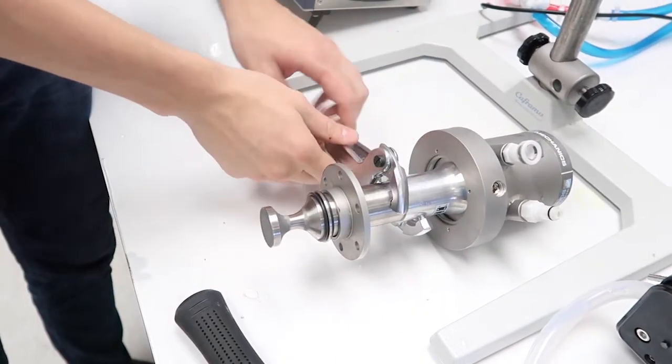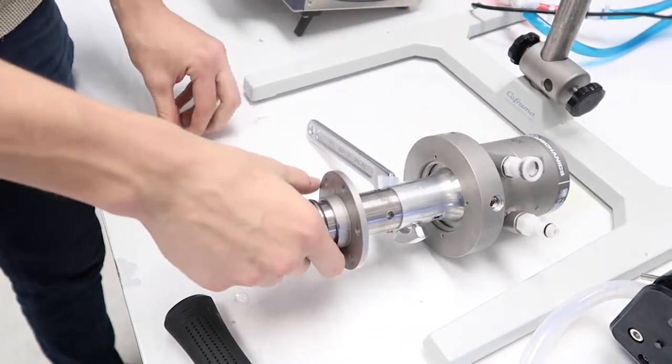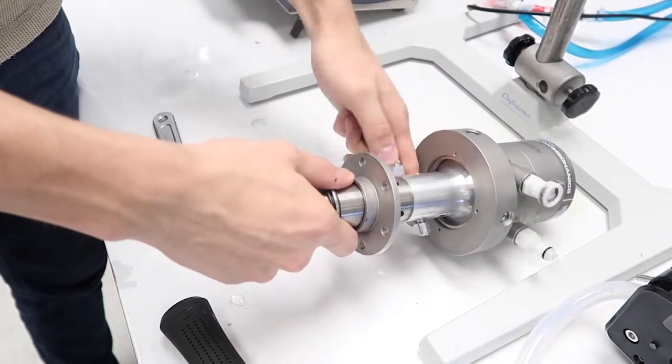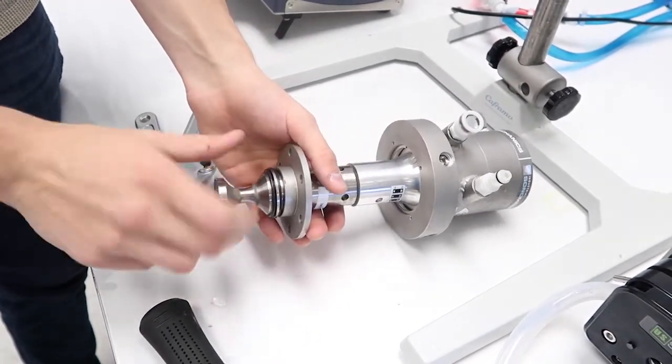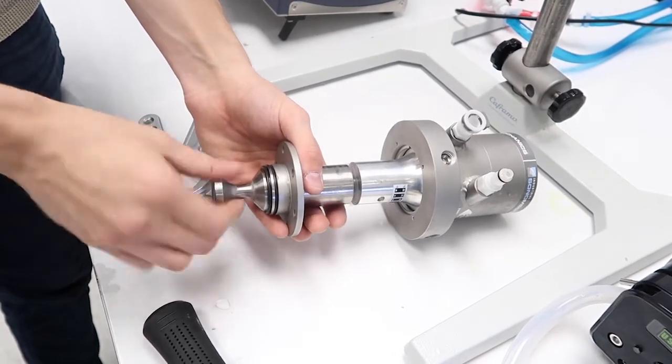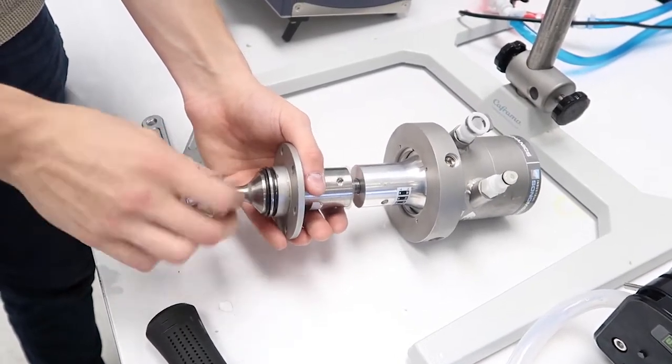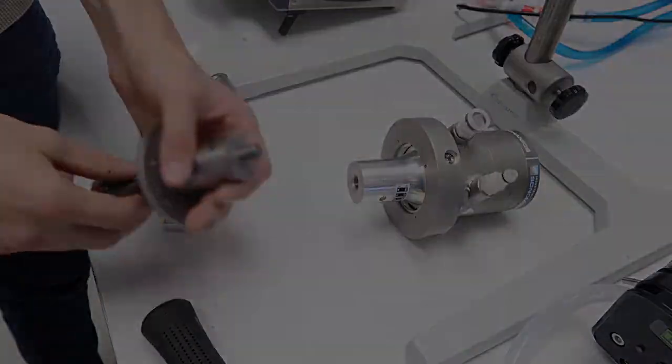When the horn turns with respect to the transducer, remove the wrenches and continue to unthread the horn by hand. Your horn is now disassembled from the transducer.